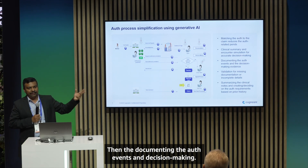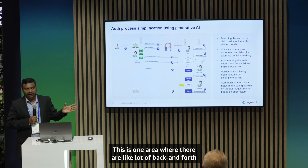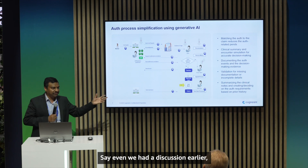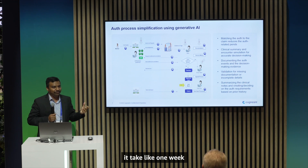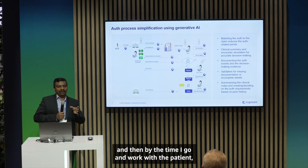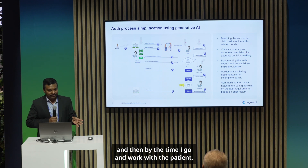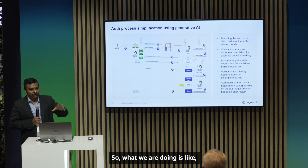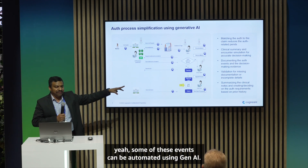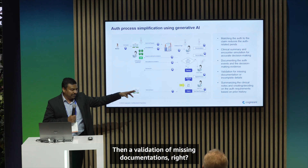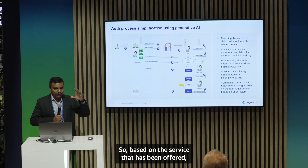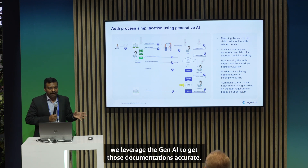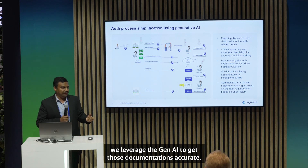Documenting authorization events and decision-making is one area with a lot of back and forth between payers and providers. As an example shared earlier, a provider said they got an auth approved, but it took one week, and by the time they went to work with the patient, the diagnosis had changed and they had to start over. Some of these events can be automated using Gen AI. Another area is validation of missing documentation — a lot of back and forth is due to missing documentation, and based on the service offered, we leverage Gen AI to get those documentations accurate.